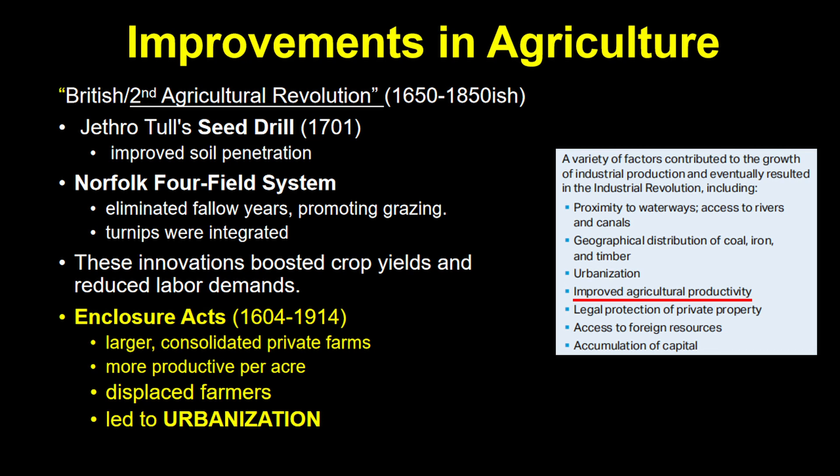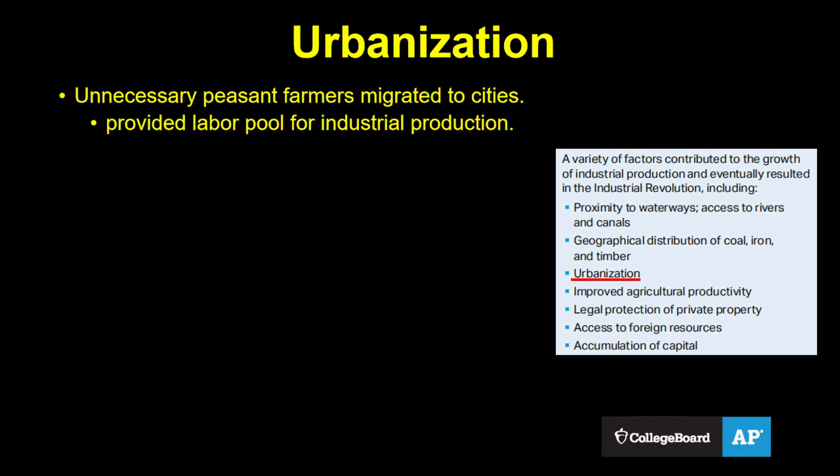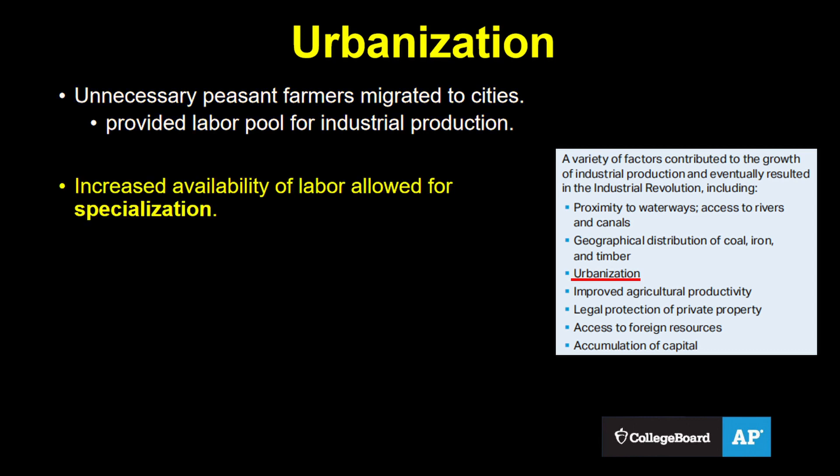Finally, the Enclosure Acts consolidated small farms into larger, more productive ones, pushing out peasant farmers in the process, which leads us to the second point: urbanization. These now-unnecessary peasant farmers migrated to cities and sought other employment. This provided the pool of labor necessary for industrial production. The larger pool of labor also facilitated specialization, with people taking jobs doing specialized individual tasks.